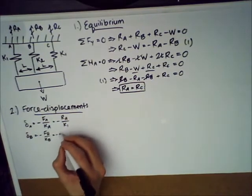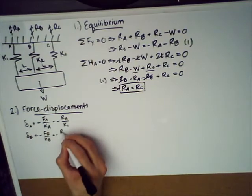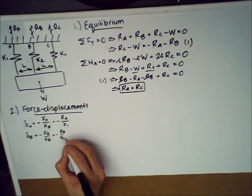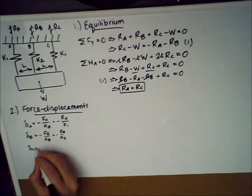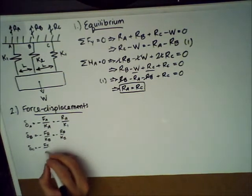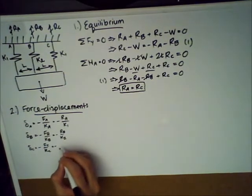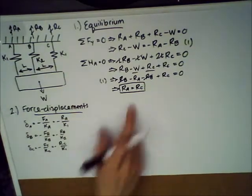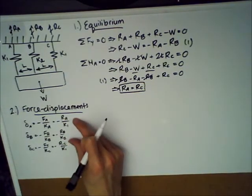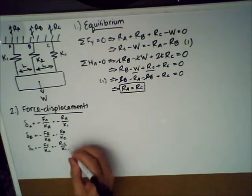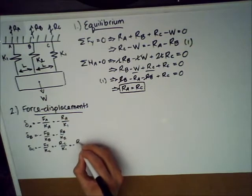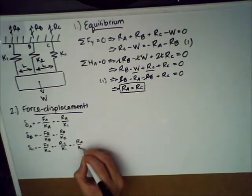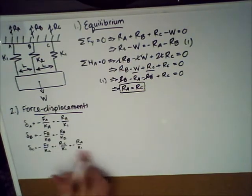And so similarly for the second spring, this displacement is F B over K B, and this is equal to negative R B over K 2. And the final one, F C over K C, which equals negative R C over K 1. And we know already from the equilibrium equations that these two are the same, R A and R C. So we can just rewrite this one as minus R A over K 1 for now. And then we'll solve for R A just by getting rid of R C for now by this equation.